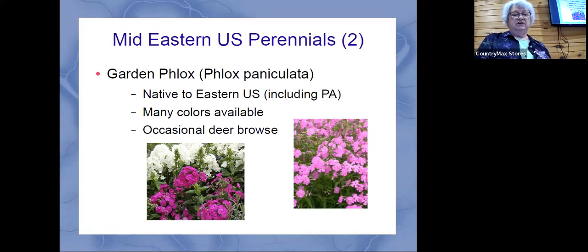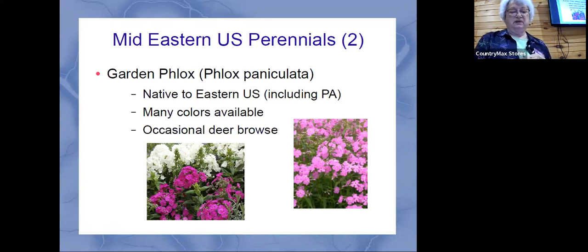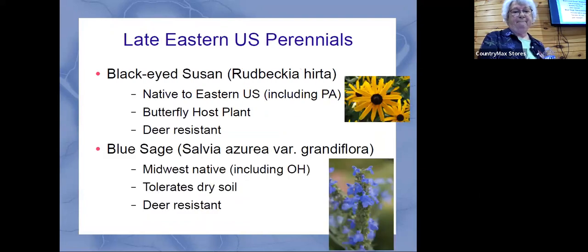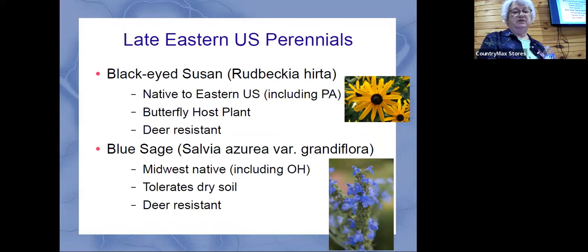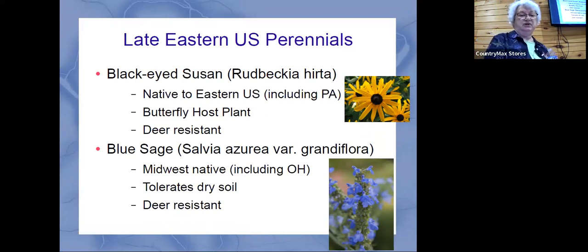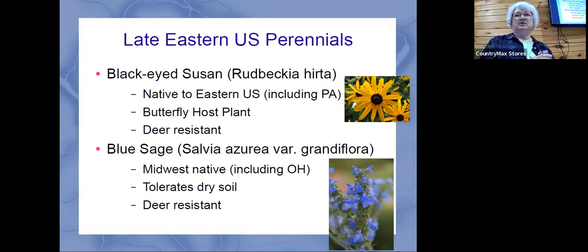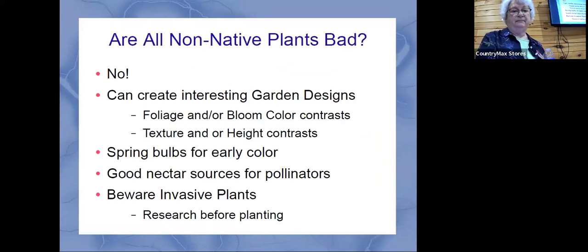Garden phlox is another typical flower that everyone is kind of used to, and it's native to the Eastern section. Here's the regular black-eyed Susan, which is smaller. The blue sage is the salvia — I have a lot of that too, the deer really don't like it. It's a pretty flower that blooms for quite a long time.